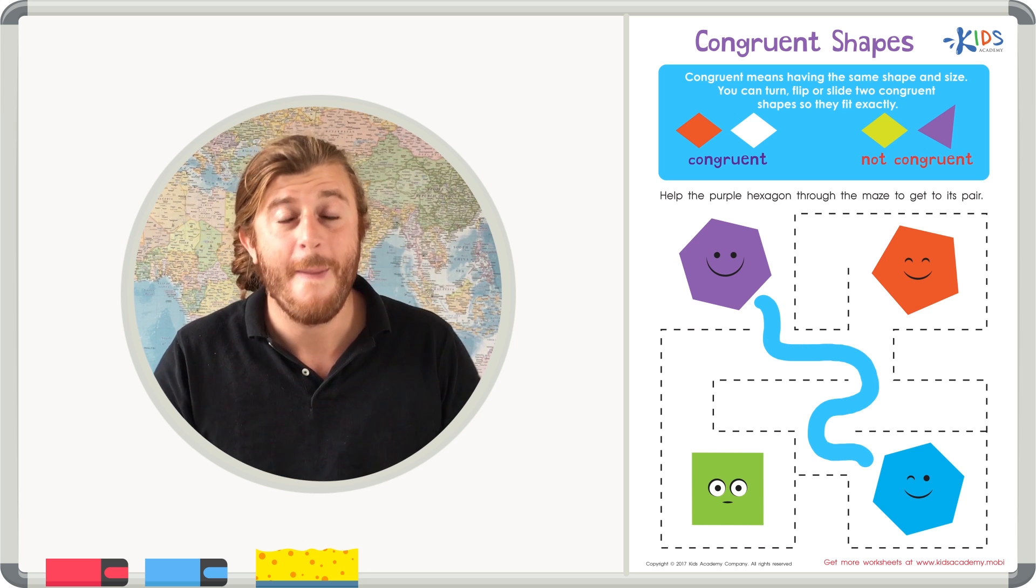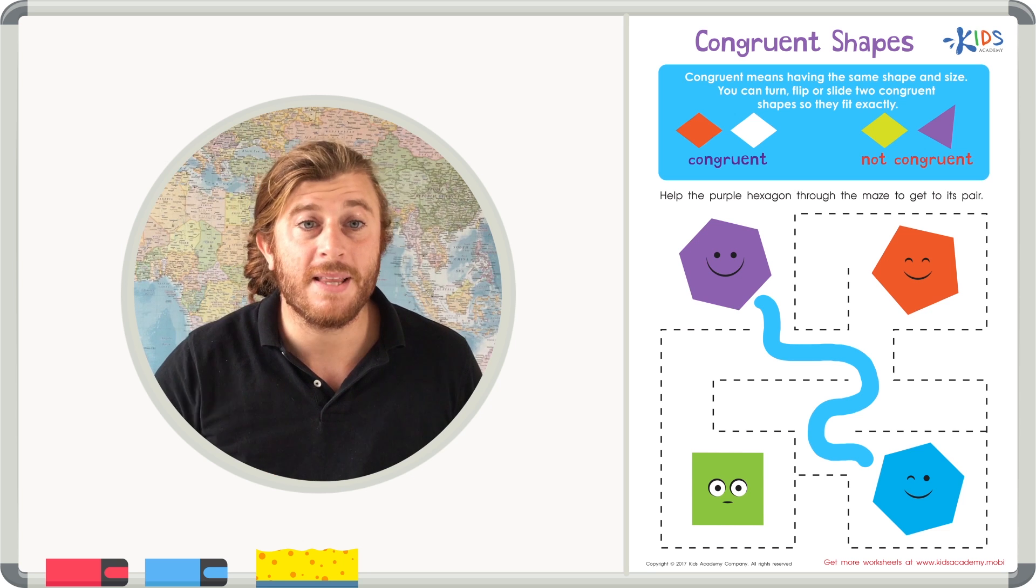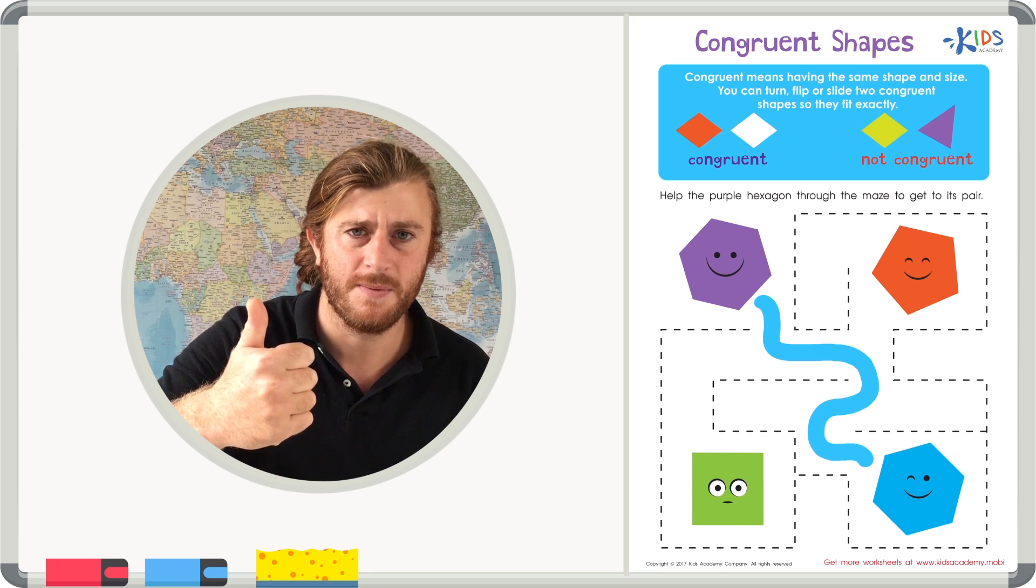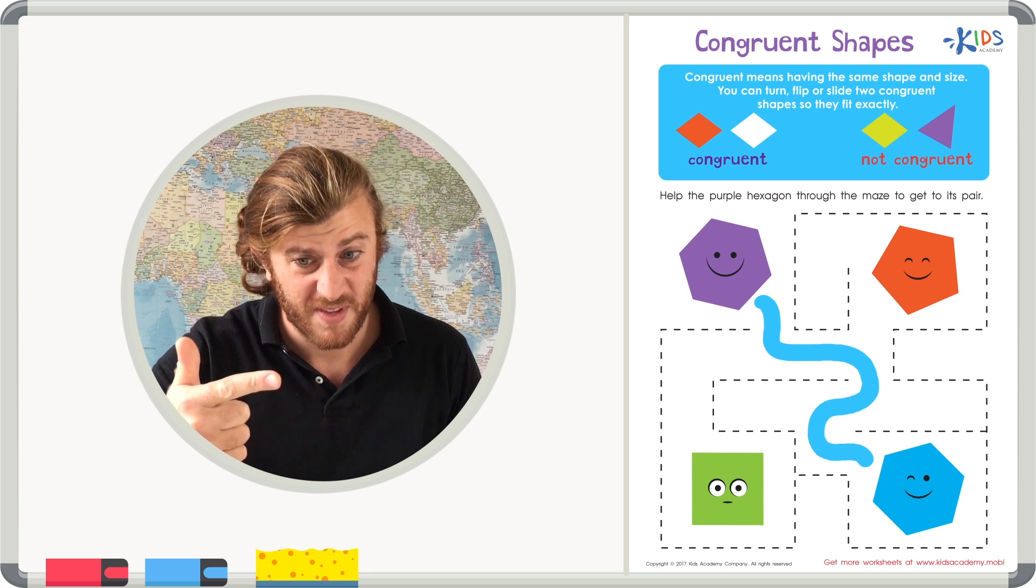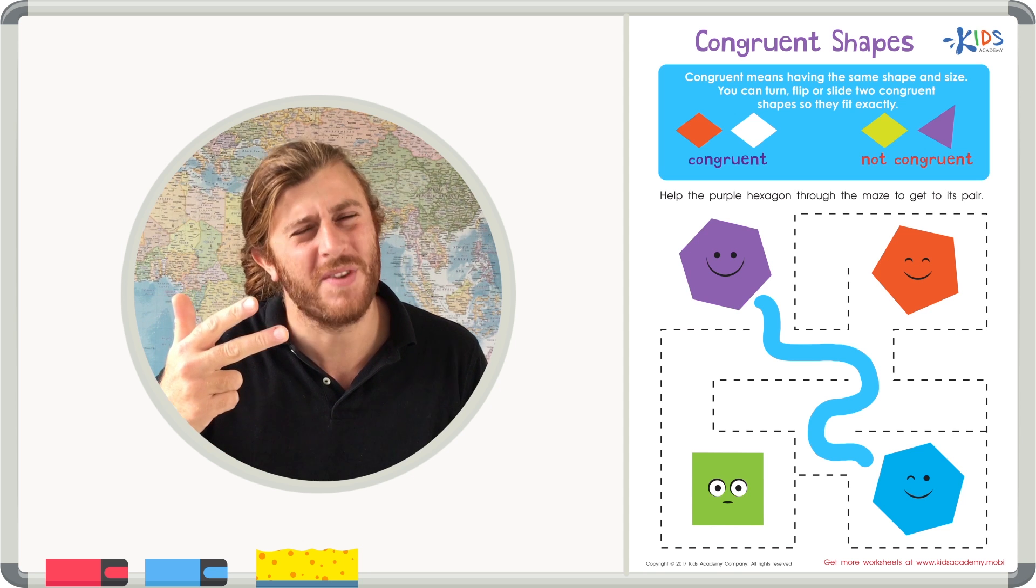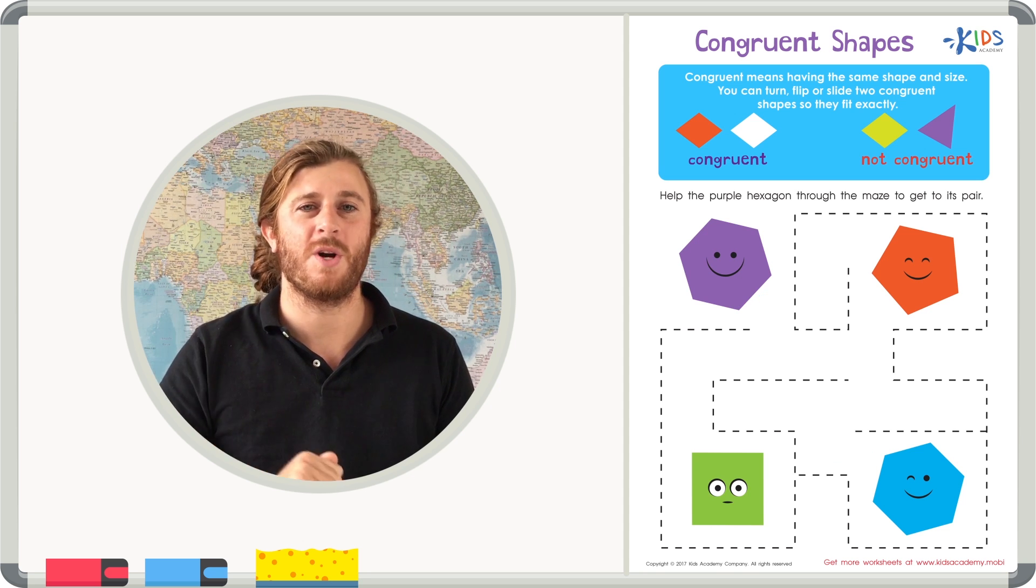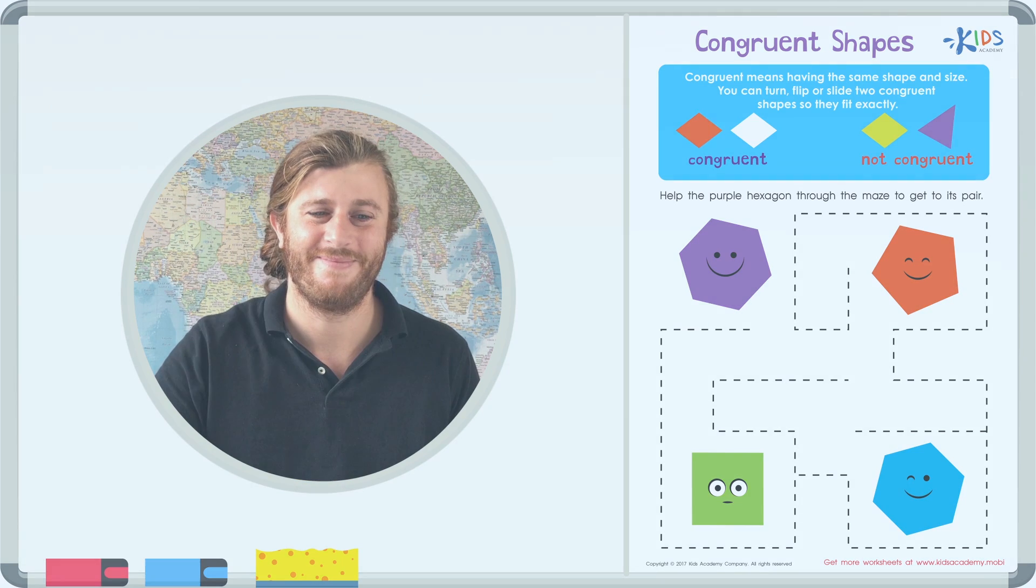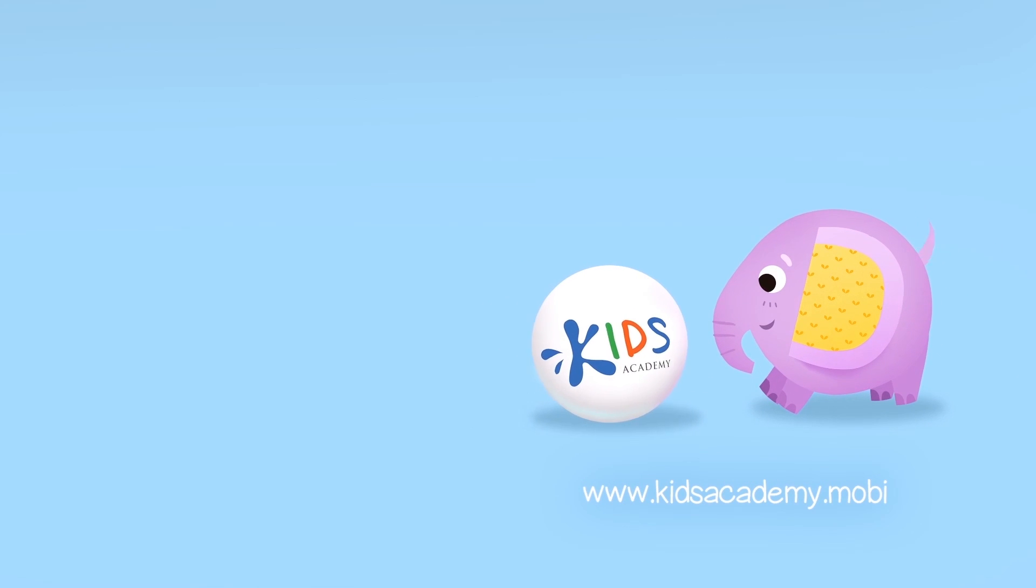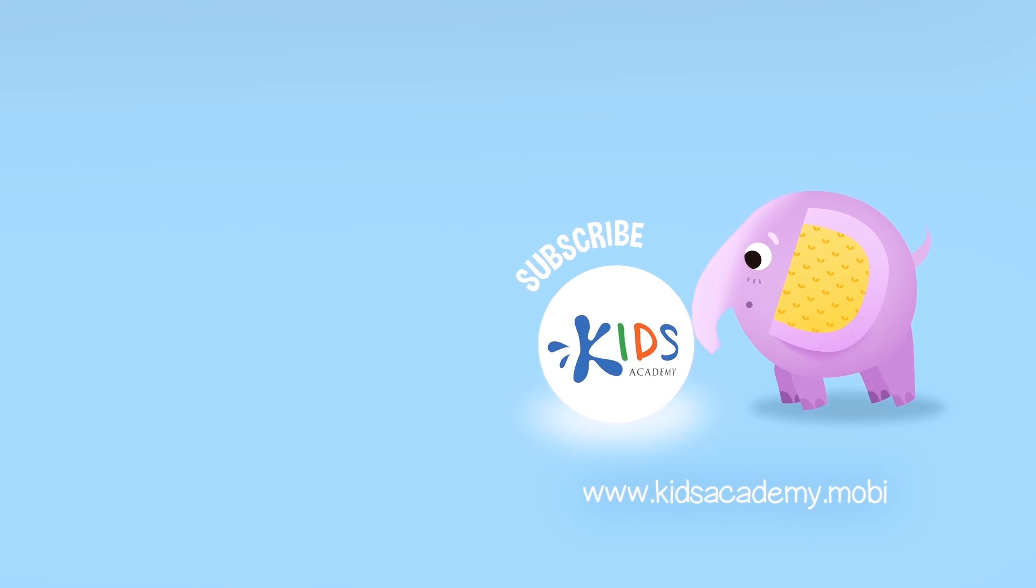Remember, boys and girls, congruent means equal, meaning they have to have the same number of sides, the same shape, and they need to be about the same size. Thanks for watching, boys and girls. See you next time. Like us and subscribe to our channel. Find links to our apps in comments below.